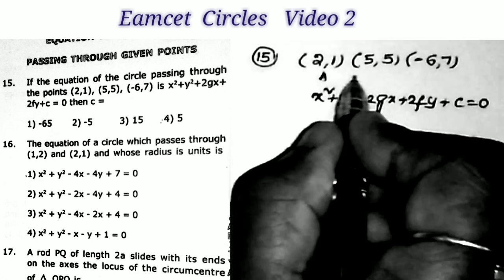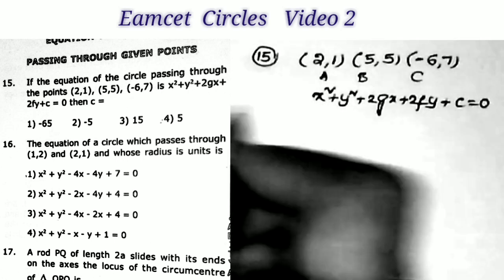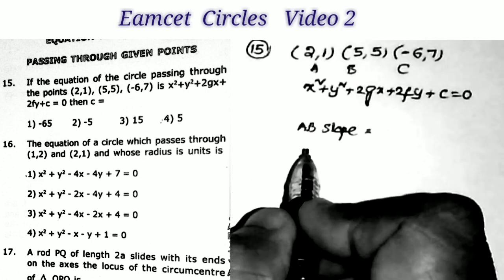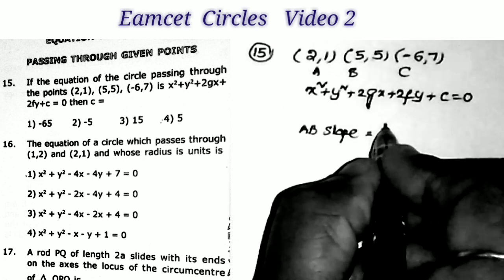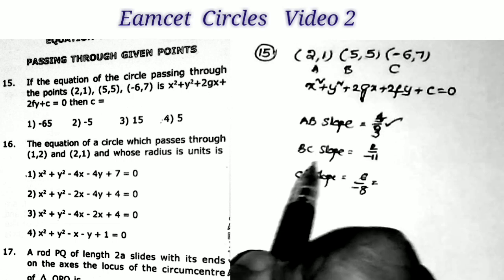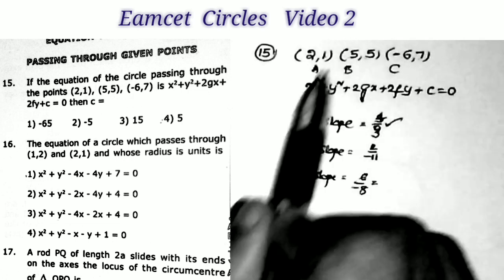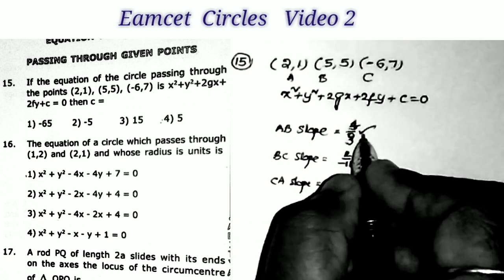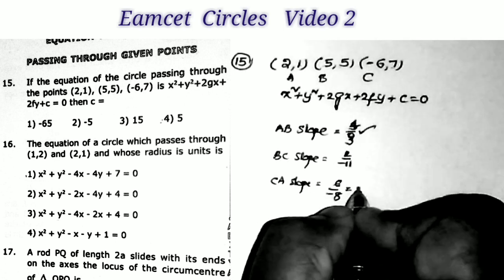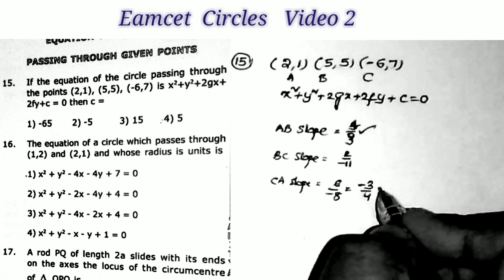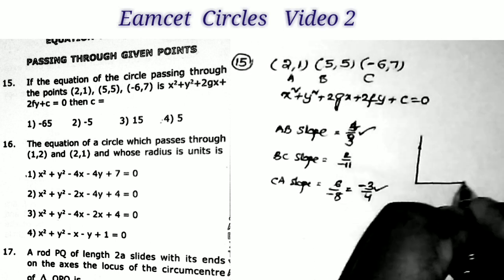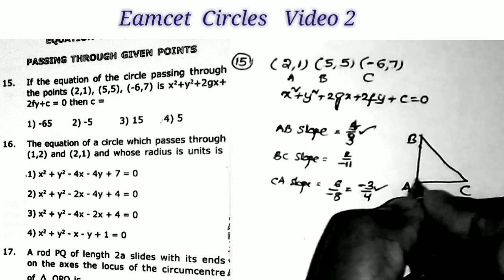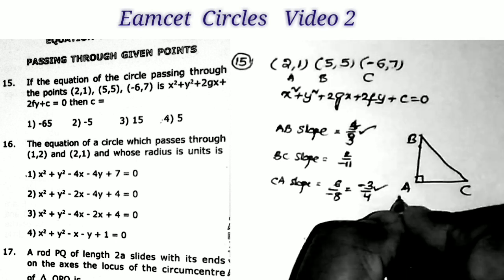Label the points A = (2, 1), B = (5, 5), C = (−6, 7). Compute slopes: slope of AB = 4/3, slope of BC = 2/−11, slope of CA = 6/−8 = −3/4. Since slope of AB × slope of CA = (4/3)(−3/4) = −1, lines AB and CA are perpendicular. So angle A is a right angle, meaning BC is the hypotenuse. The center of the circle is the midpoint of BC = ((5 + (−6))/2, (5 + 7)/2) = (−1/2, 6).